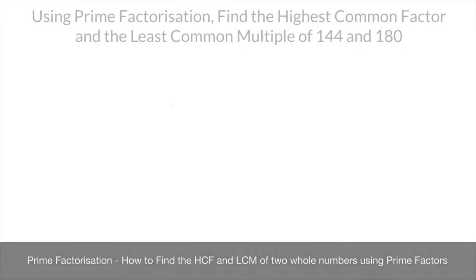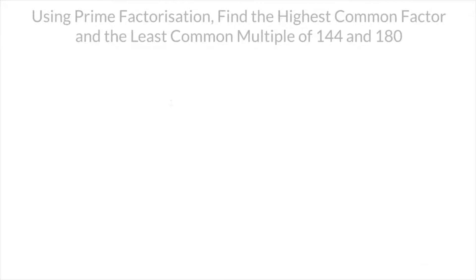We now learn how to use prime factorization to find the highest common factor as well as the least common multiple of two whole numbers. To learn the method, we're going to work through an example. We're asked, using prime factorization, to find the highest common factor and the least common multiple of 144 and 180.